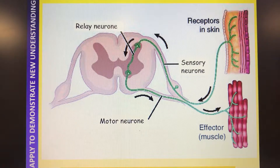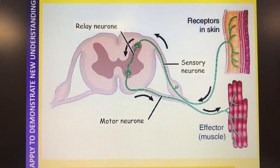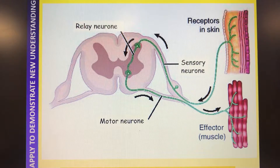The only part not on this diagram is the stimulus, which is what the body is going to be responding to. It could be something sharp, something hot, or something bright like a bright light. Receiving information - if you think 'receiving' and 'receptors', they're quite similar, so that helps us remember it. The receptors could be the skin, the eye, or the tongue - anything linked to the senses.